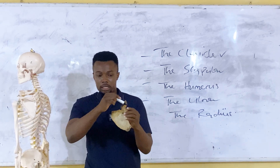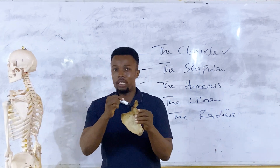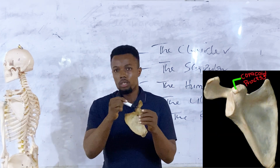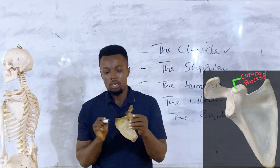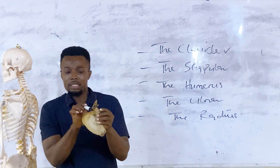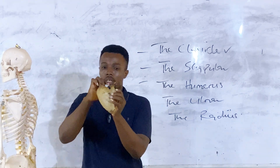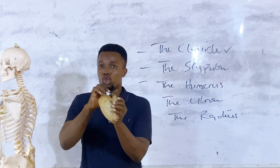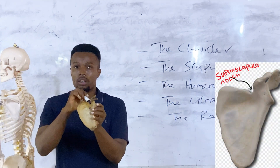We also have this structure that is like a hook. This is referred to as the coracoid process of the scapular. Then, if you look just directly behind the coracoid process, there is a hole here. I place this marker in this hole — this hole is referred to as the suprascapular notch.